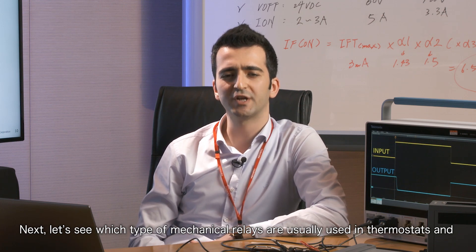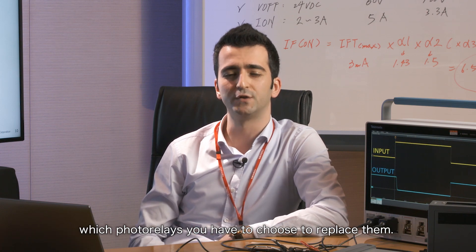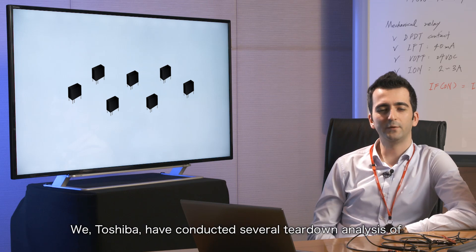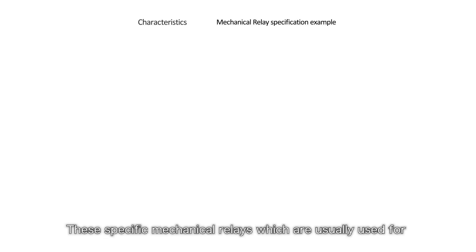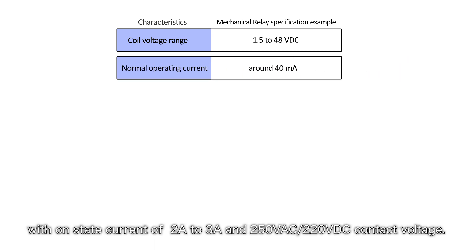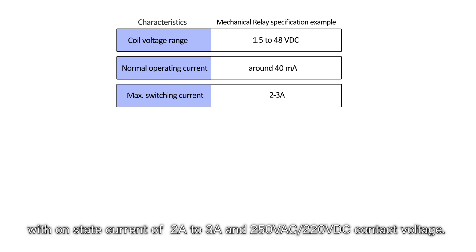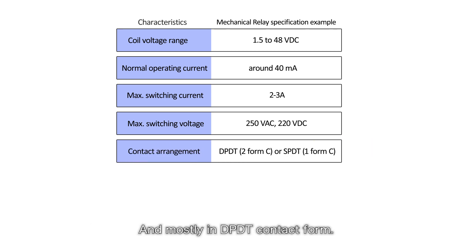Next, let's see which types of mechanical relays are usually used in thermostats, and which photo relays you should choose to replace them. Toshiba has conducted several teardown analyses of global major thermostats, and here are the results. These specific mechanical relays are usually used for mainly contact capacity under 5V DC and 40mA, with an on-state current of 2–3A, and 250V AC or 220V DC contact voltage, and mostly in DPDT contact form.